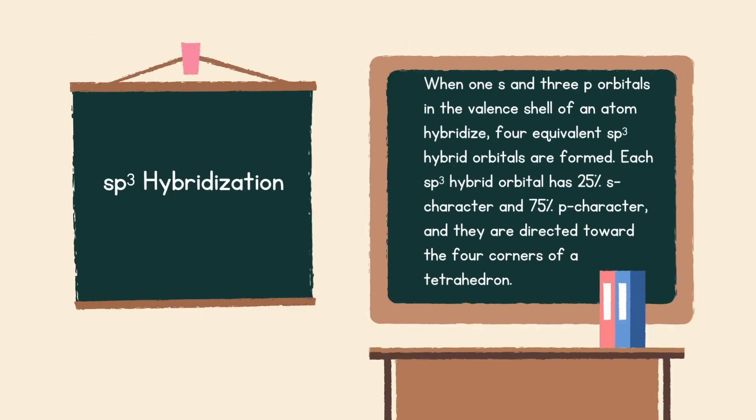Third is sp cubed hybridization. When one s and three p orbitals in the valence shell of an atom hybridize, four equivalent sp3 hybrid orbitals are formed. Each sp3 hybrid orbital has 25% s character and 75% p character and they are directed toward the four corners of a tetrahedron.